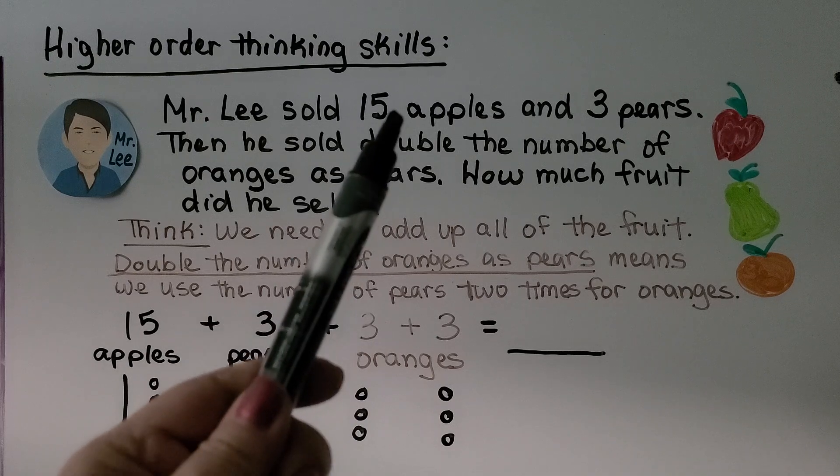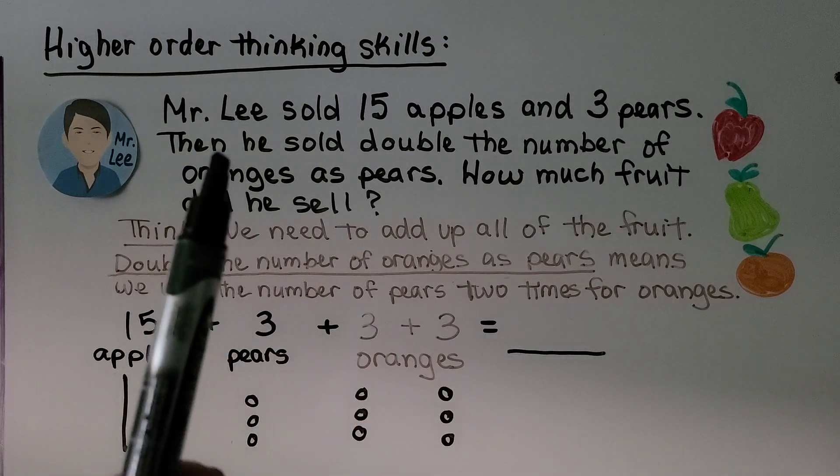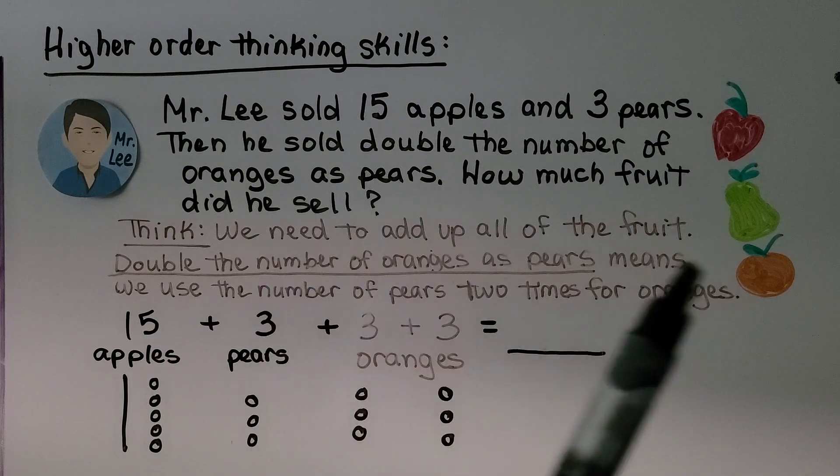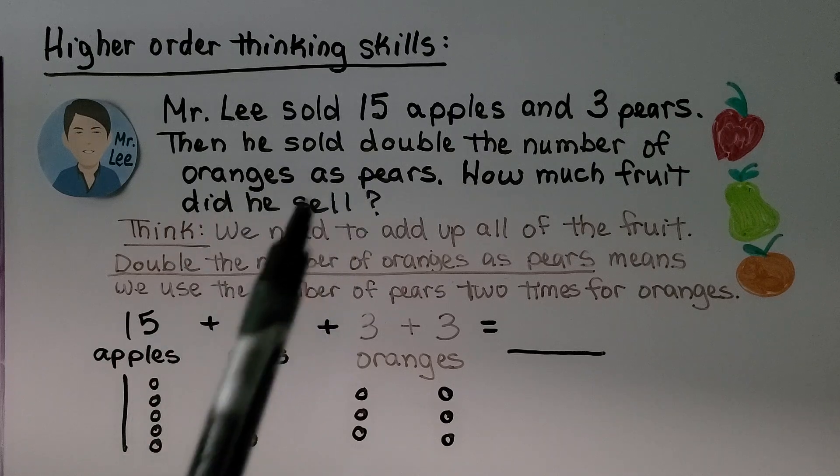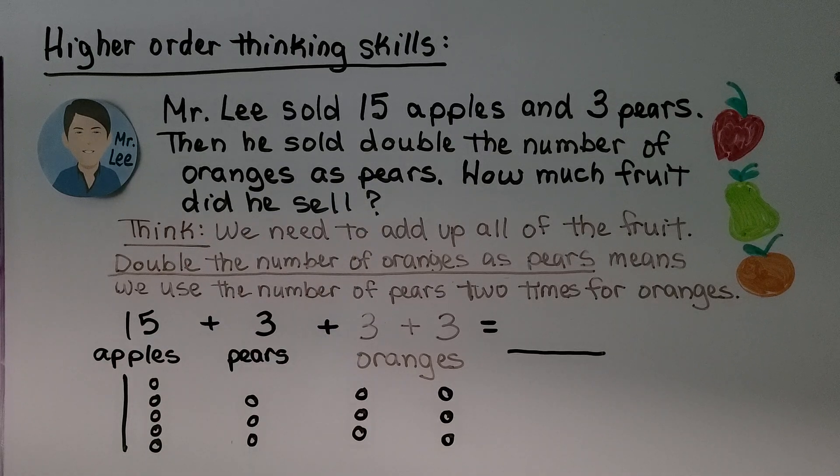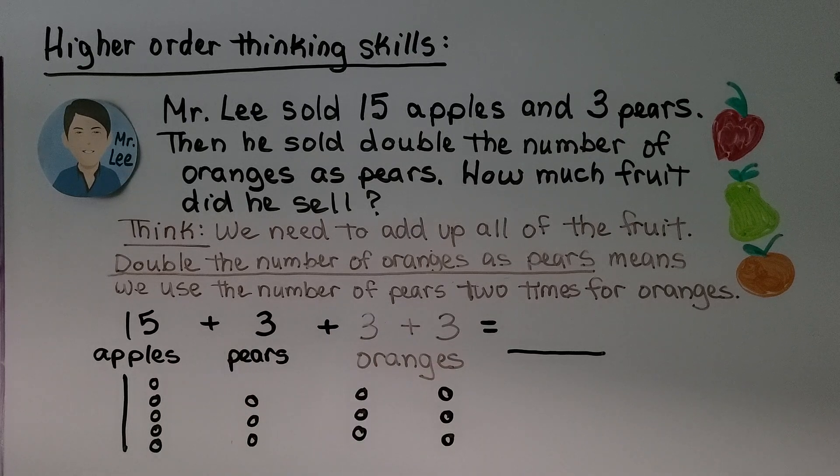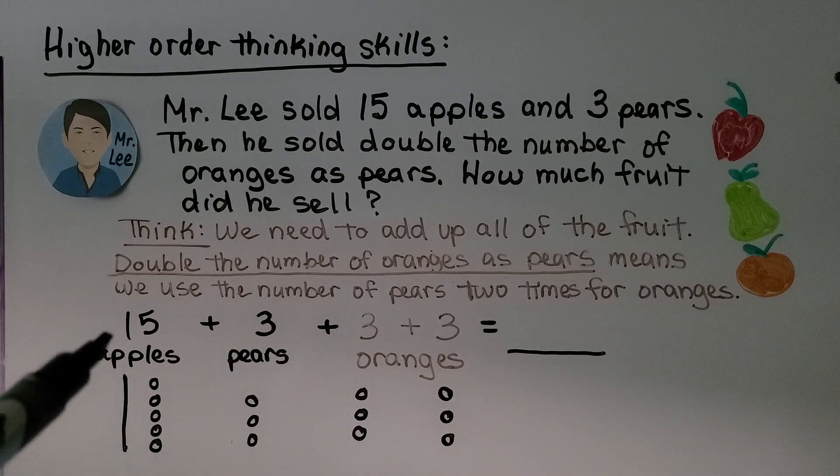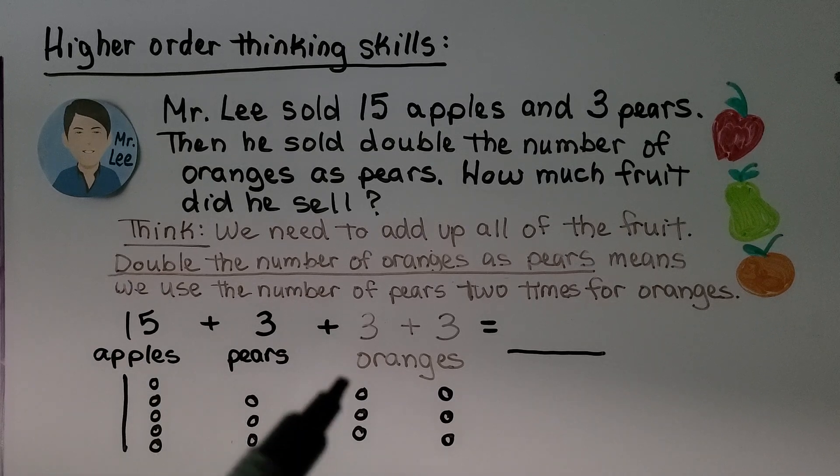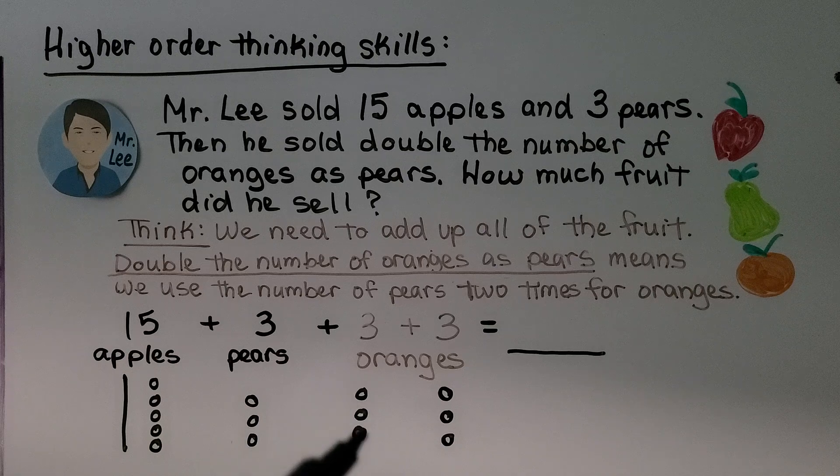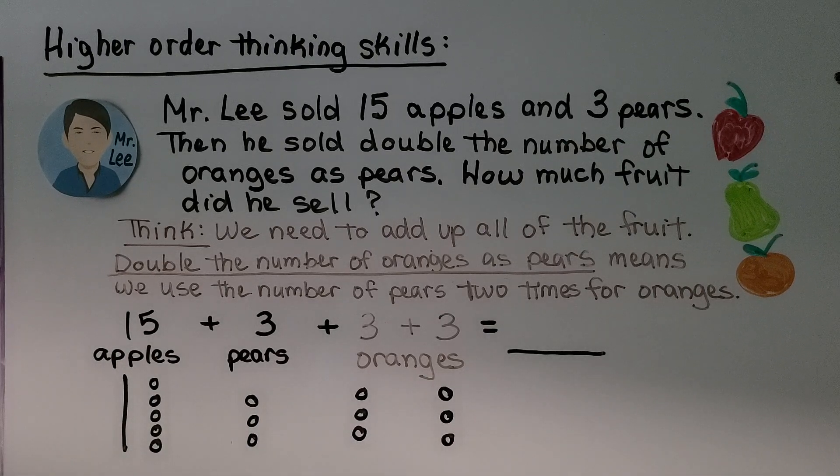It says 15 apples, 3 pears. Then he sold double the number of oranges as pears. Since pears are 3, oranges must be 3 plus 3. That's double the number of oranges as pears. We can draw quick pictures. 15 is a ten and 5 ones. 3 pears, we have 3 ones. For oranges, we have 3 ones and 3 ones. And we can group them all together and add them.